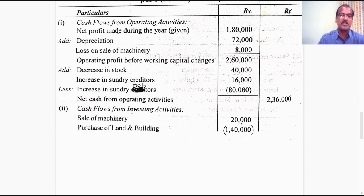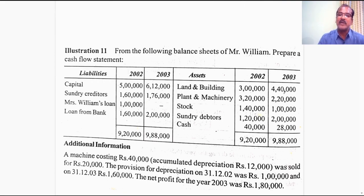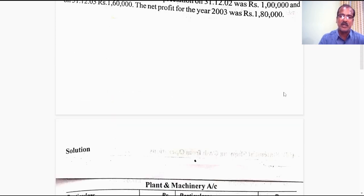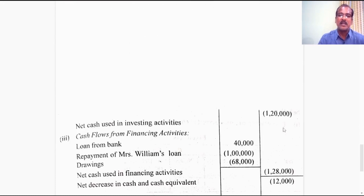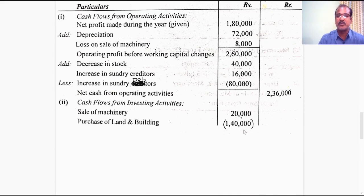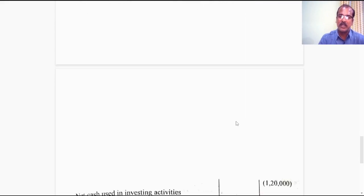Cash flows from investing activities: sale proceeds of machinery are 20,000, recorded as cash inflow. There is also a purchase of land and building — looking at the balance sheet, there is an increase in land and building of 1,40,000, which represents purchase of a non-current asset, recorded as cash outflow under investing activities. The net result of investing activities: 1,40,000 negative and 20,000 positive gives 1,20,000 cash used in investing activities.